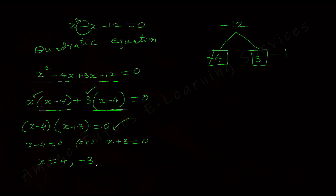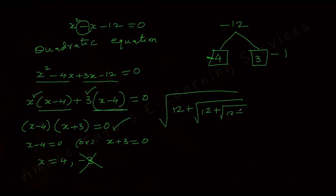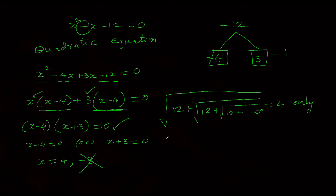Among 4 and negative 3, only 4 is possible — we can ignore the negative answer. So the value of square root of 12 plus square root of 12 plus square root of 12 and so on to infinity equals 4. I hope you understood both questions completely without any doubt. If you find this video helpful, kindly share it with your friends and family. Please like and subscribe to our channel for more such questions. Thank you.